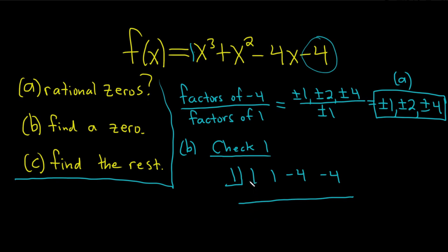In synthetic division, we wrote down the 1 and we wrote down the coefficients. 1, 1, negative 4, negative 4. And the first step is to just bring this one down. So 1. Then you perform the multiplication. 1 times 1 is 1. Then you add. 1 plus 1 is 2. Then 2 times 1 is 2. And you add. So you get negative 2. Negative 2 times 1 is negative 2. We add. We get negative 6. No. It's no good. We don't want that. It's bad. Terrible. We want to get 0.